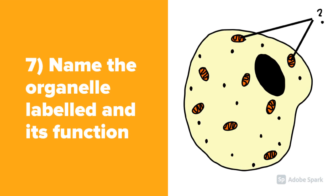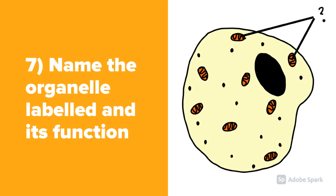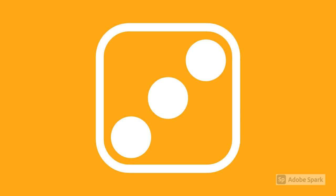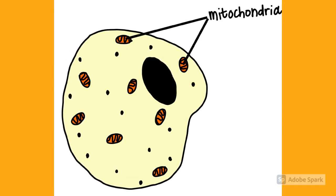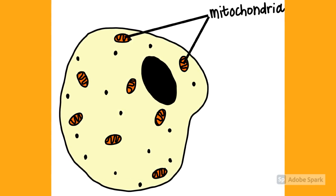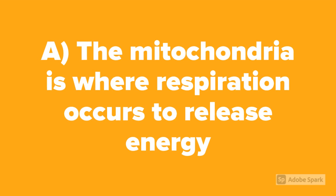Question number seven: Name the organelle labeled and its function. It is mitochondria. The mitochondria is where respiration occurs to release energy.